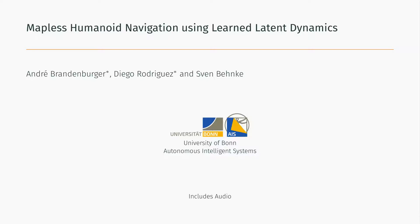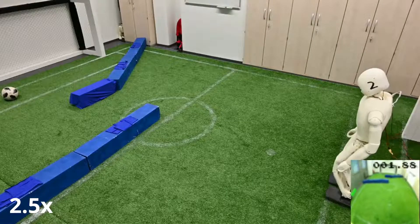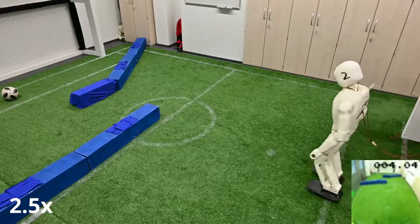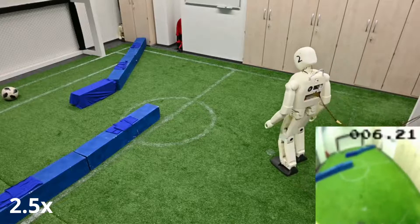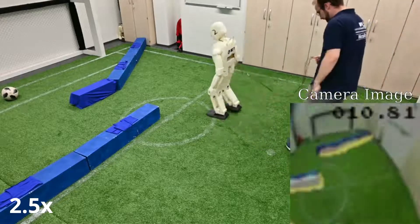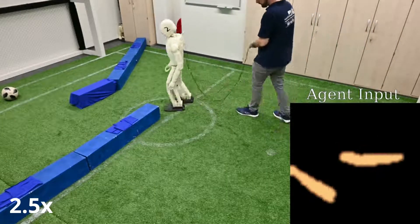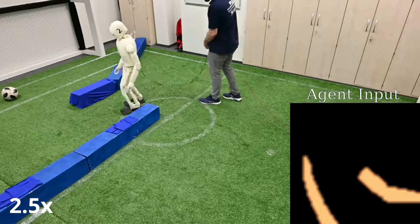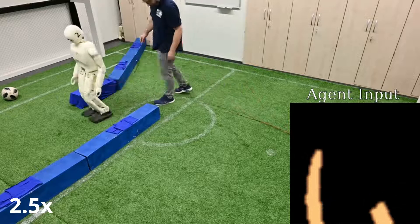In this video, we briefly present our work described in the paper, Mapless Humanoid Navigation Using Learned Latent Dynamics. In our work, we address the task of path planning, where a humanoid Nimbro OP2X robot has to reach a target while avoiding obstacles.